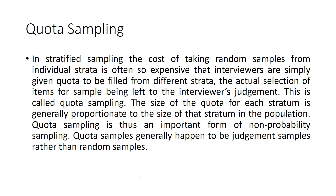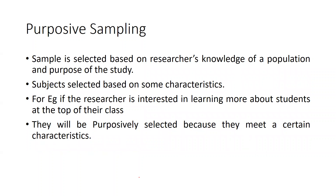Quota sampling is used when the cost of taking a random sample from individual strata is too expensive. Interviewers are given quotas to fill from different strata, with the actual selection left to the interviewer's judgment. The size of the quota for each stratum is generally proportional to the size of the stratum in the population. Quota samples are generally judgment samples rather than random samples.